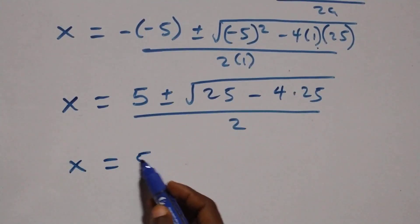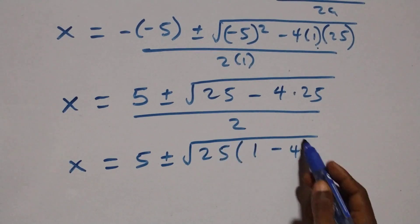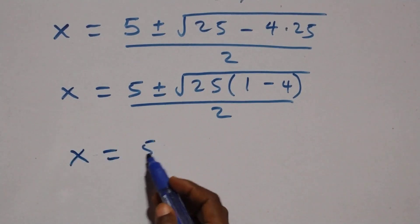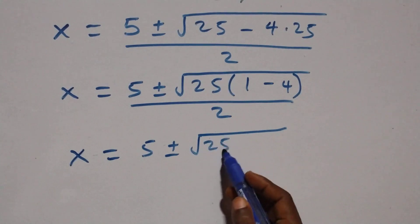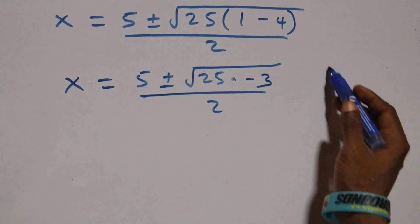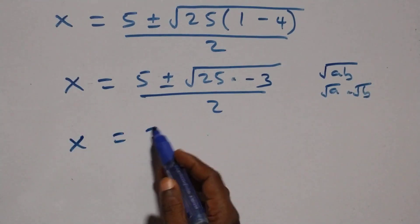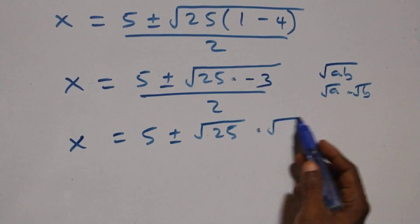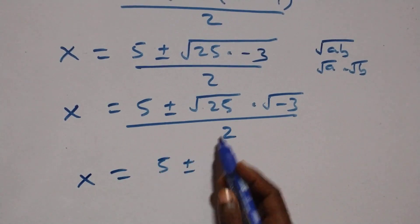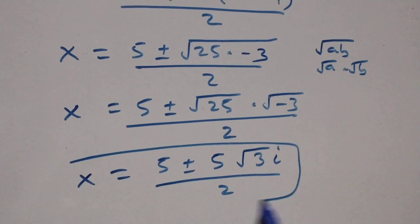At this, we have x equals 5 plus or minus square root of 25 is common here. We have 25 into bracket 1 minus 4, over 2. So x equals 5 plus or minus square root of 25 times 1 minus 4, that's minus 3. Then when we have root of a times b, written as root a times root b, this becomes x equals 5 plus or minus root 25 times root minus 3 over 2. And this becomes x equals 5 plus or minus 5 times the square root of minus 3, same as root 3 times i, over 2. Here we have two complex solutions.